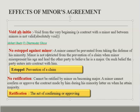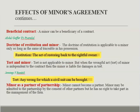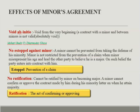A minor is not restricted from the prevention of a claim. When a minor misrepresents his age and leads the other party to believe he is of major age, and on such belief the party enters into a contract with him, still estoppel is not available against the minor. If a minor makes an agreement, the major party cannot continue to enforce the same agreement.